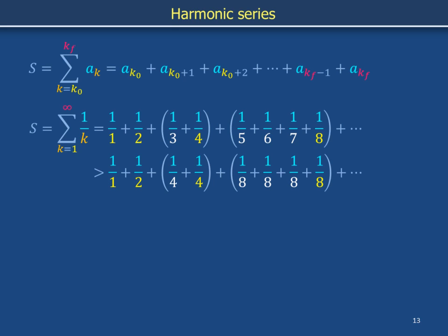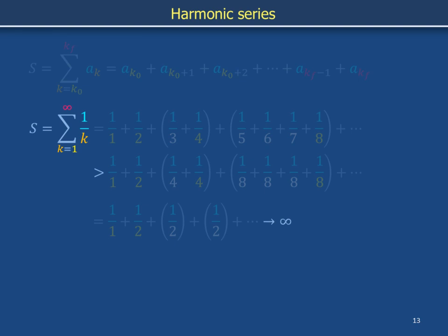The terms in each pair of parentheses add up to 1 half, and the process of starting with 1 and then adding copies of 1 half over and over creates running totals that become larger and larger without bound. The running totals prescribed by S grow even faster than these. Thus, the running totals prescribed by S grow without bound.